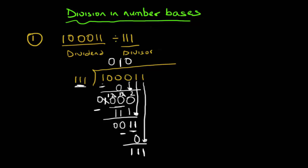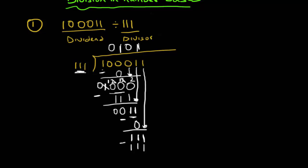Now I have '111' inside and '111' as divisor — they are equal, so I put one on top. One times '111' gives '111'. I subtract: one minus one is zero, one minus one is zero, one minus one is zero. I'm left with '000' — no remainder and nothing left in the dividend.